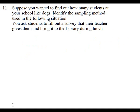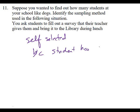Looking at number 11: suppose you wanted to find out how many students at your school like dogs. Identify the sampling method: you ask students to fill out a survey their teacher gives them and bring it to the library during lunch. What's that one? Self-selected — because it's kind of the way we did our survey. We send an email out and hopefully people self-select. Why is it self-selected? Because they choose whether or not to take it — they actually physically have to carry it to the library. If the teacher had collected it, it would have been more random.